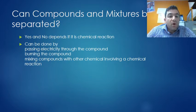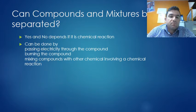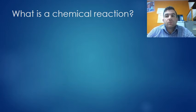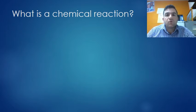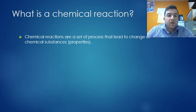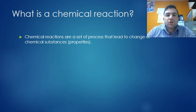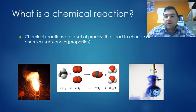Separation can be done by passing electricity through the compound, burning the compound, or mixing compounds with other chemicals involving a chemical reaction. What is a chemical reaction? Chemical reactions are a set of processes that lead to a change of chemical substances with new properties. We're changing the substance, we're changing its properties. We can change by burning - these are examples of chemical reactions.